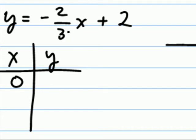And again, since our denominator of our slope is three, let's choose multiples of three. So, if x is zero, this term goes away completely, leaving us with y equal two.